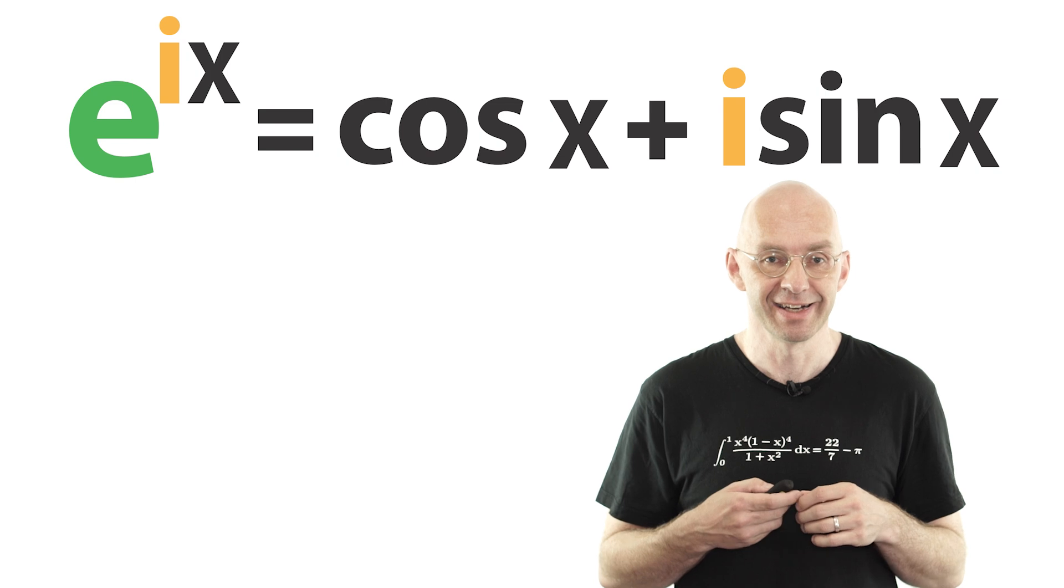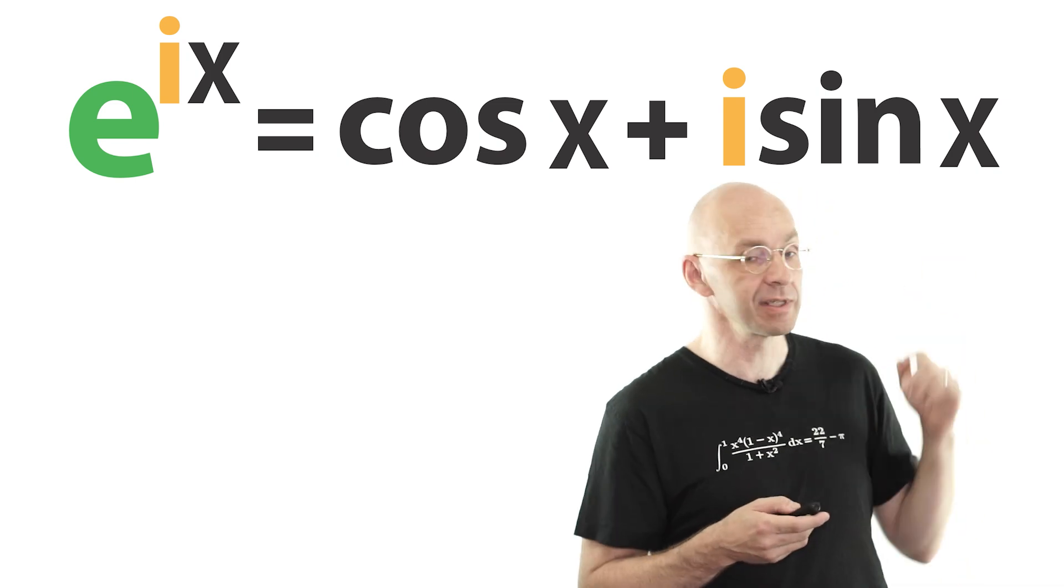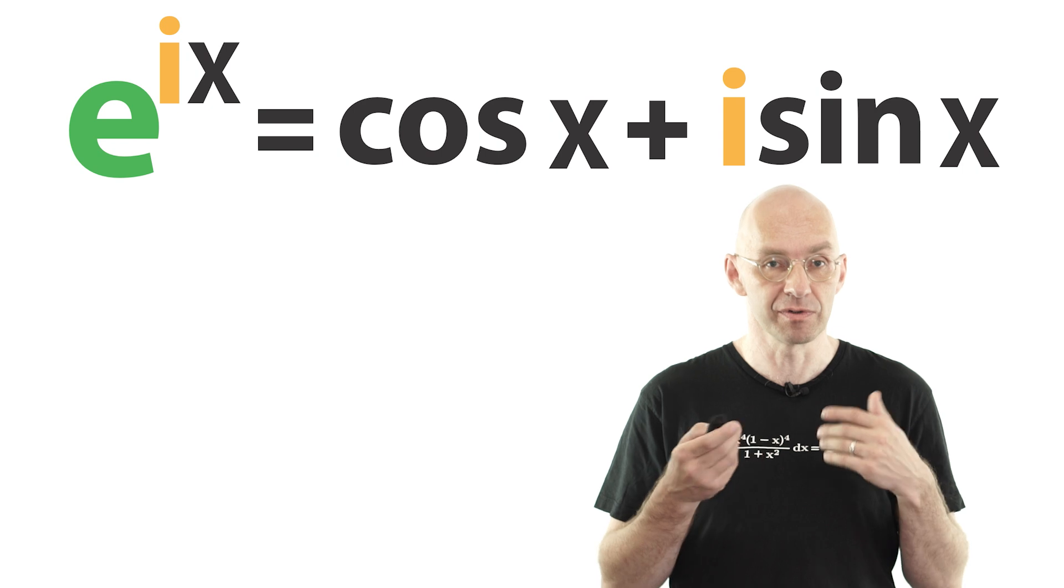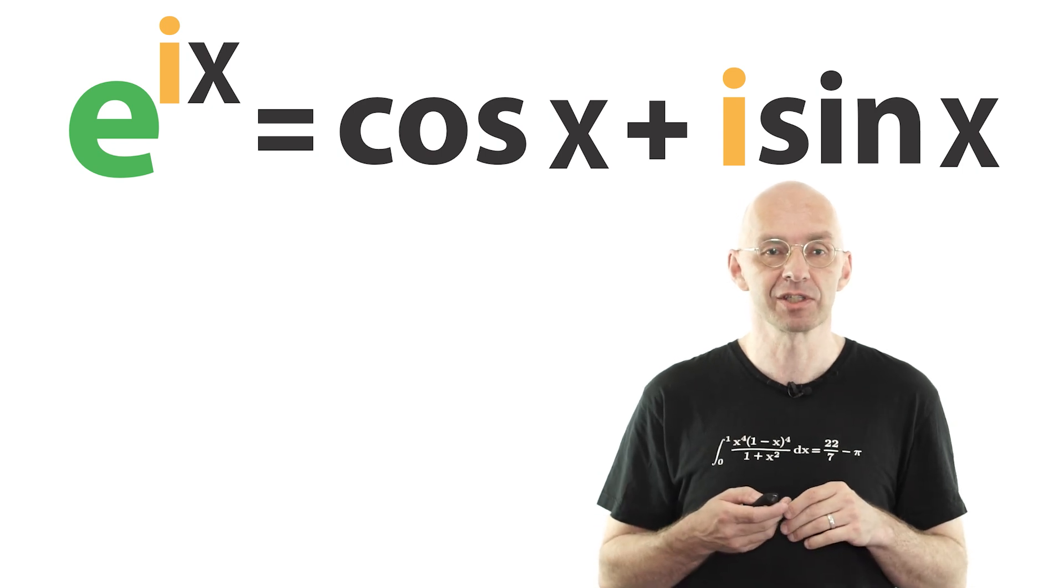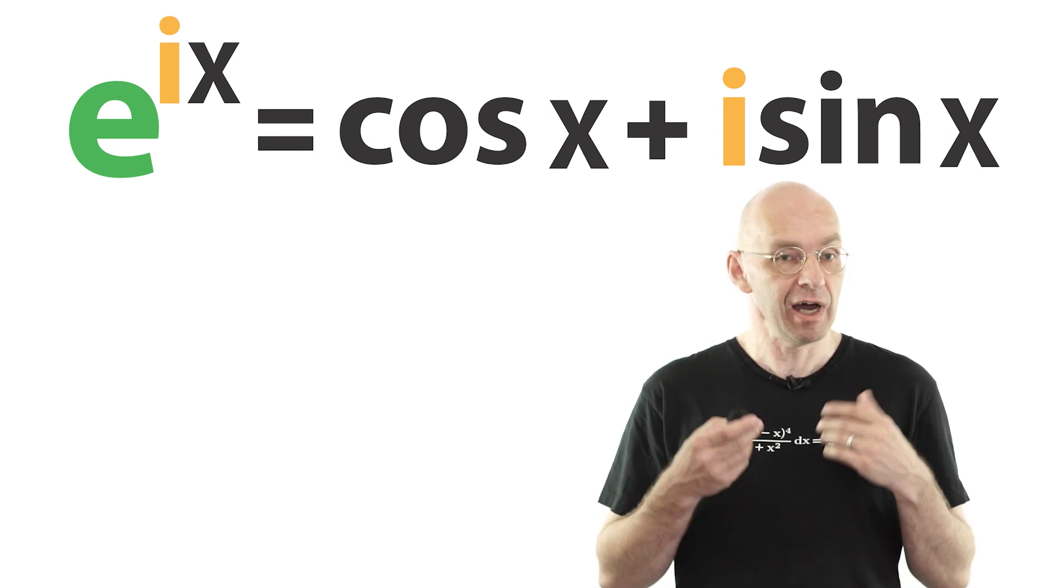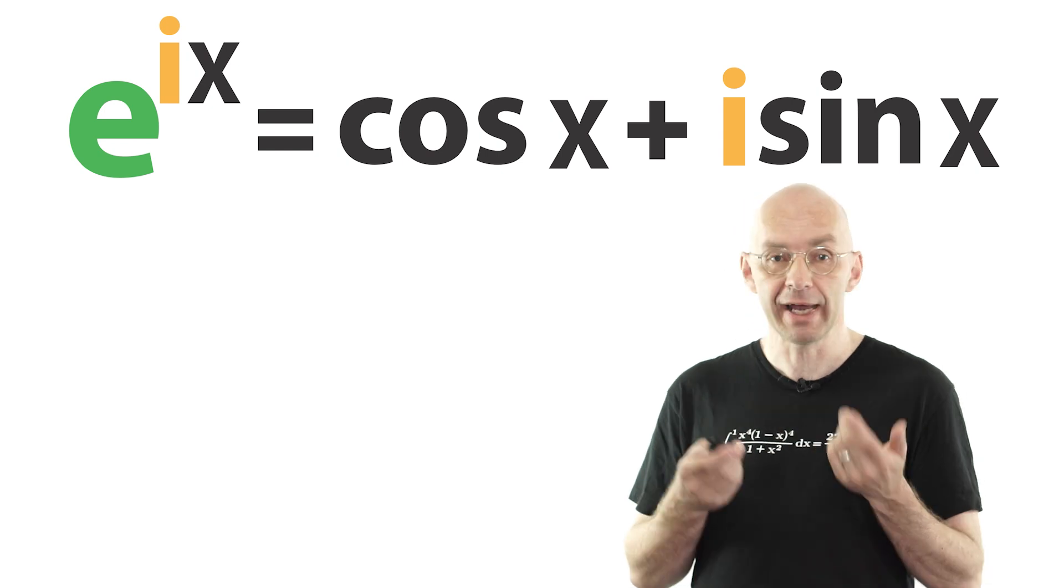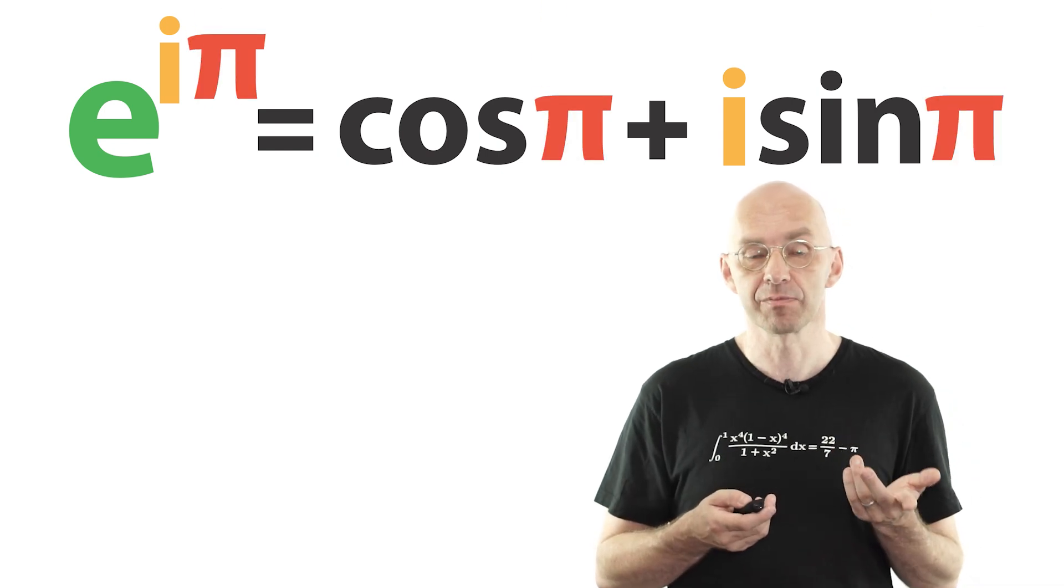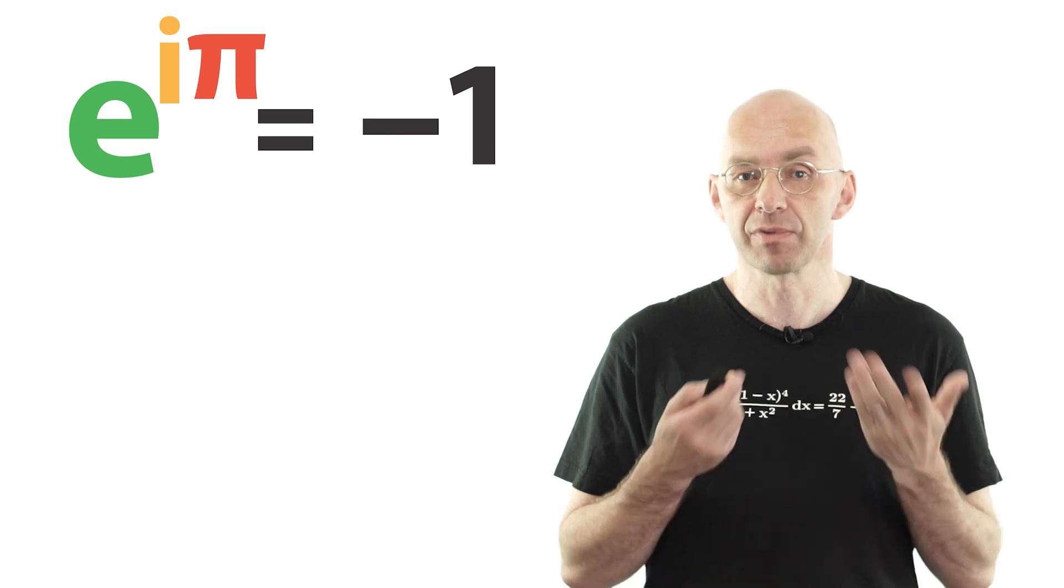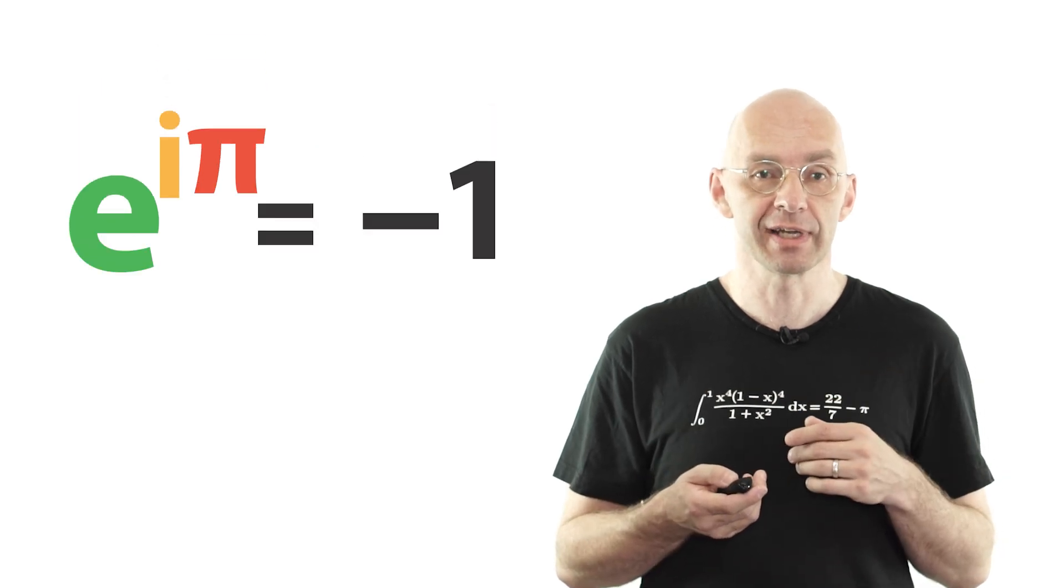Now, I'll go over all this slowly in this other Simpson-based video up there. So, if you want a bit slower, check it out. Now, after plugging in π for x, the right side becomes minus 1. Which then brings us full circle back to Euler's identity.